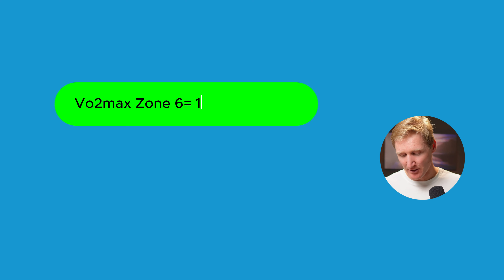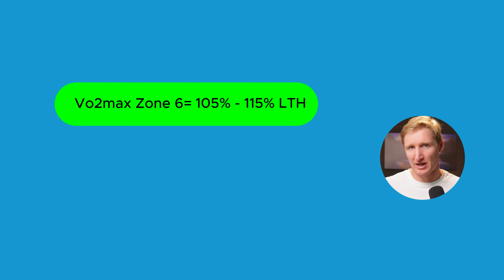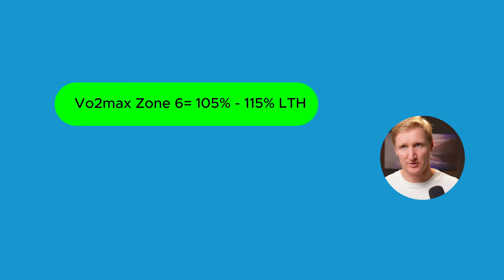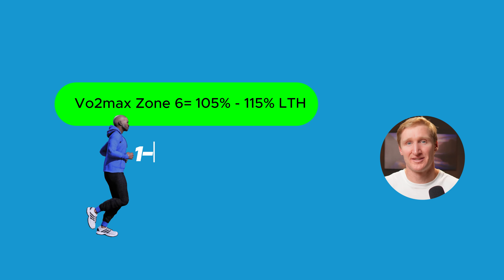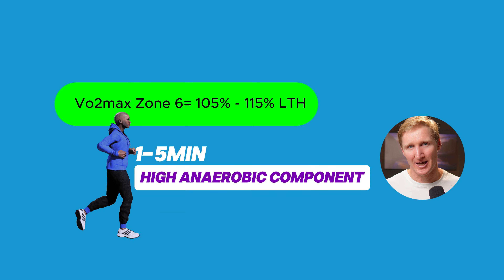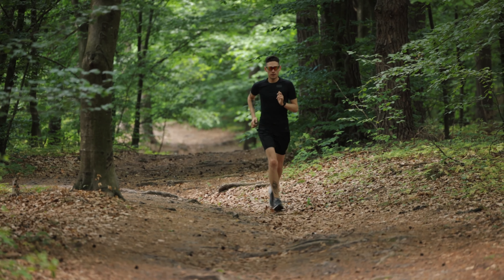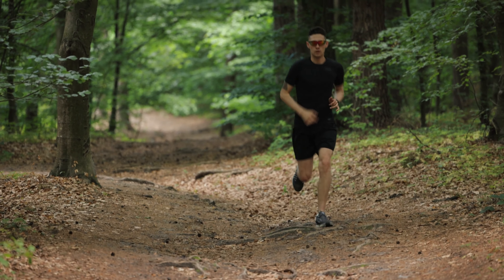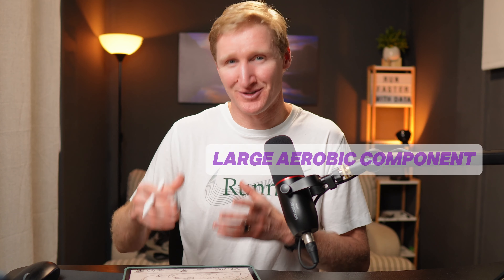The final workout is a Zone 6 VO2 max workout. VO2 max is the maximum amount of oxygen demanded by the mechanical or muscle work you're doing. It can be confusing because you're working one to five minutes maximum with a high anaerobic component, but it's called VO2 max because, despite the anaerobic dominance, the large amount of muscle mass recruited means every muscle cell has some aerobic metabolic component regardless of how glycolytically dominant it is.